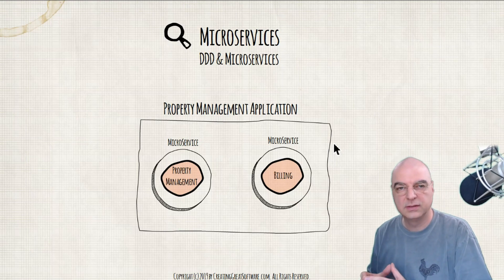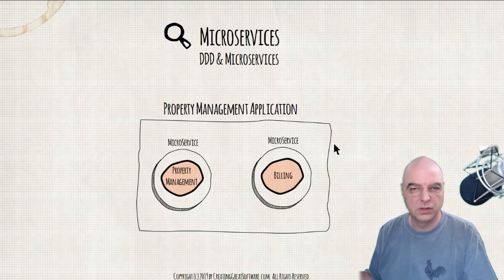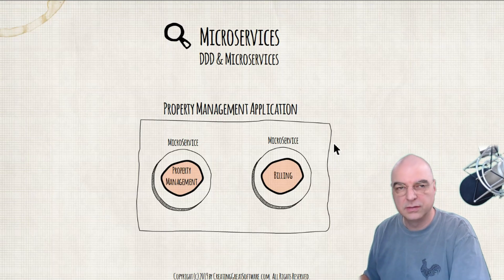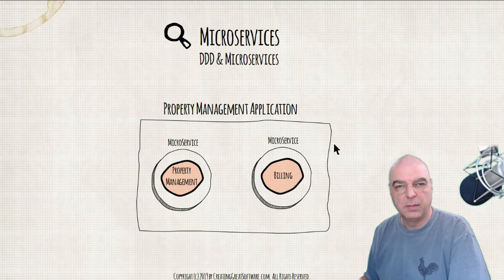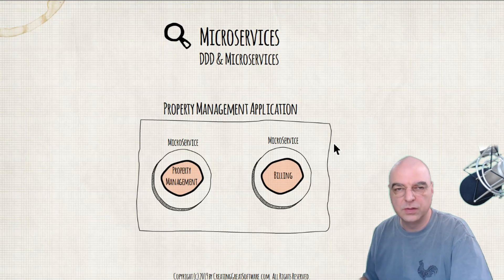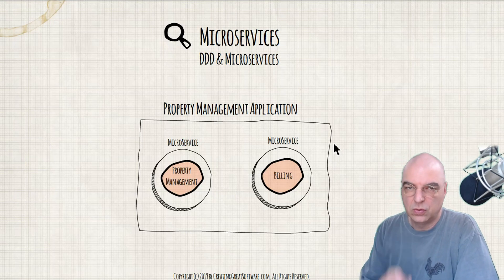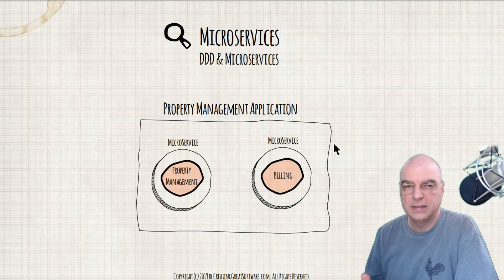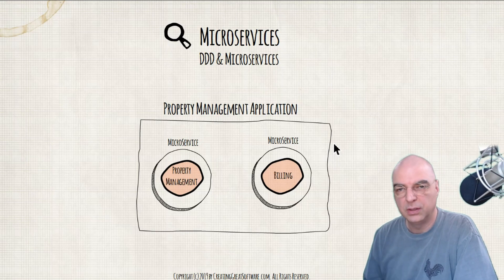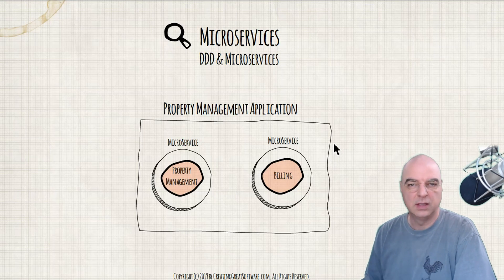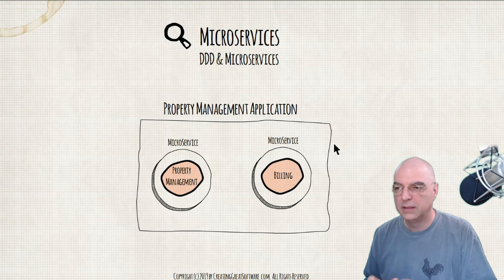So how do we now have a billing microservice when my overall solution is actually about property management? A solution for property managers in the real estate industry might need two or more microservices. One microservice can deal strictly with property management — which is probably the core piece of a real estate software company — where you need to maintain information about tenants, property owners, work orders, and a real-time ledger of transactions.